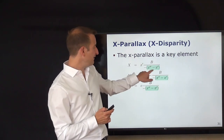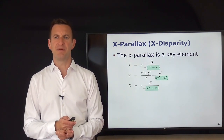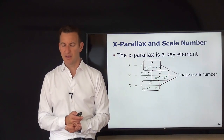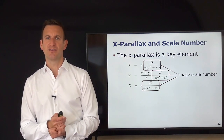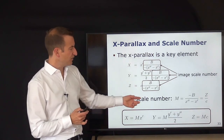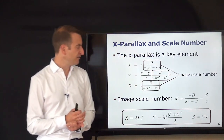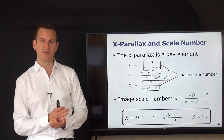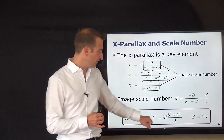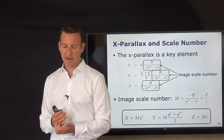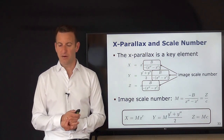The term b divided by the x-parallax appears frequently and is sometimes summarized as the image scale number m, to simplify equations. So m equals minus b divided by the x-parallax, which also equals z divided by c — the ratio of depth to camera constant. The expressions for x, y, and z then simplify to just m times the respective pixel coordinate.